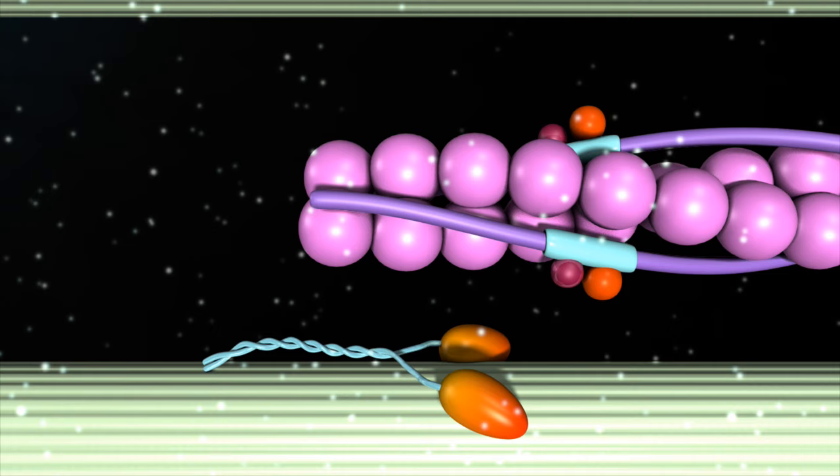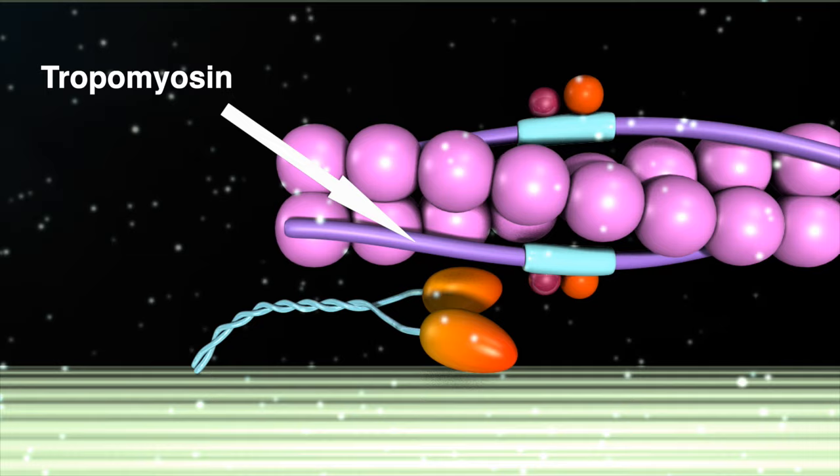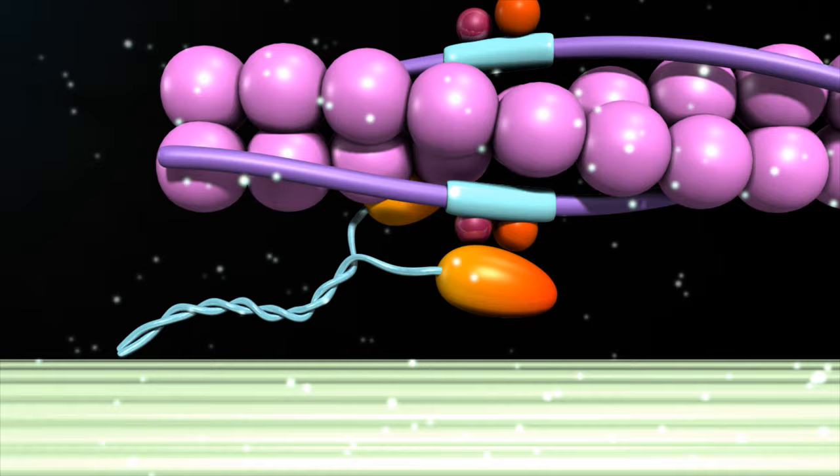The calcium binds to troponin, changing its shape and so moving tropomyosin from the active site of the actin. The myosin filaments can now attach to the actin, forming a cross-bridge.